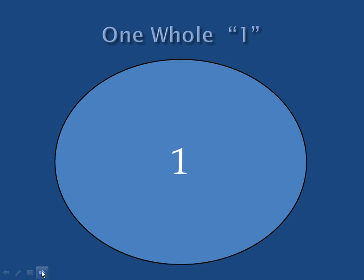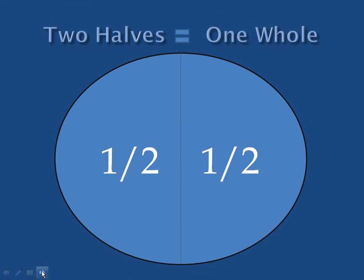One whole. In this case, one whole circle. Two halves equal one whole circle. Divide the circle down the middle, top to bottom, and create two halves.